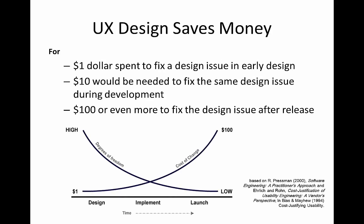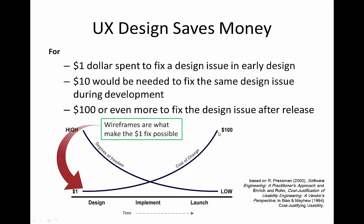If you remember this screen from way back in the second week of our course, it talked about why we use UX design because it saves money. A dollar spent to fix a design issue in early design — for every dollar spent there, during development it would cost $10 to fix, and after release it would cost $100 to fix. So, wireframes are what make the $1 fix possible. If you're working in paper and pencil, it's as simple as getting an eraser, erasing what you don't like, and redrawing it.